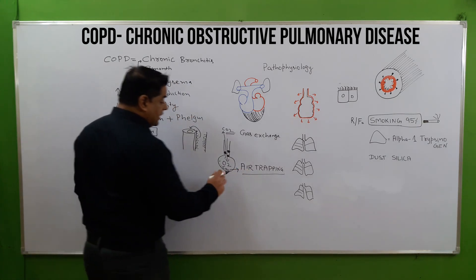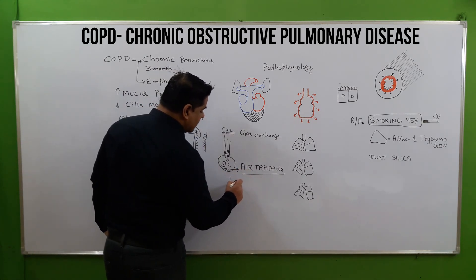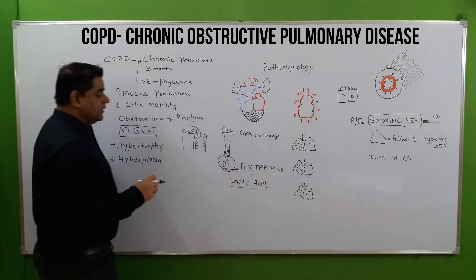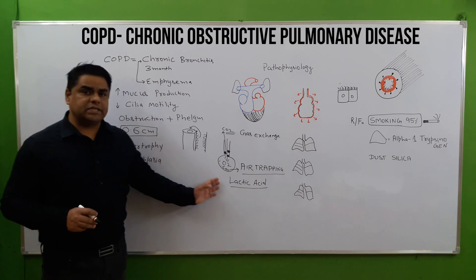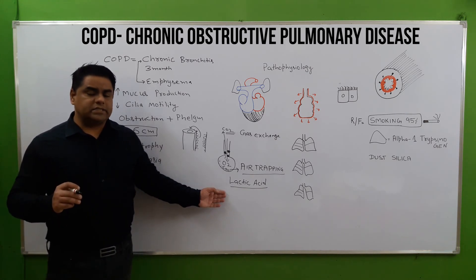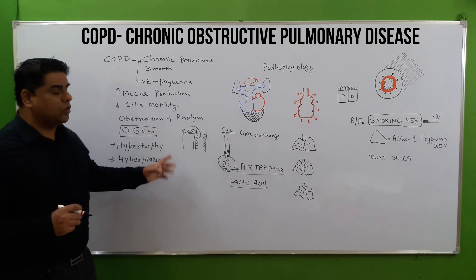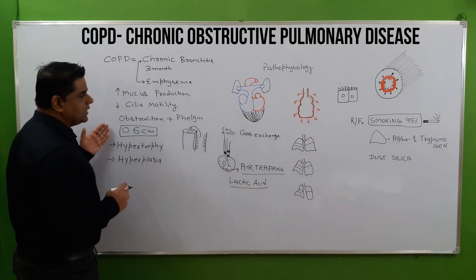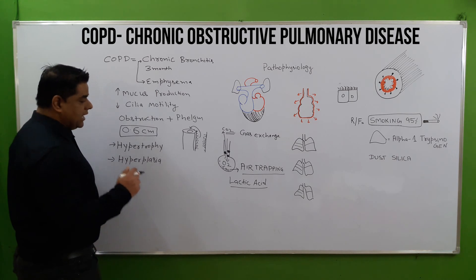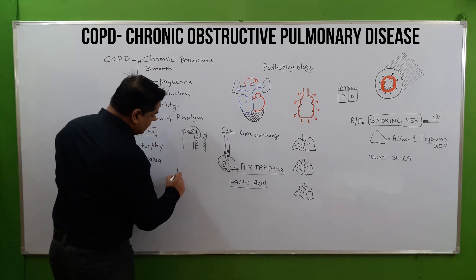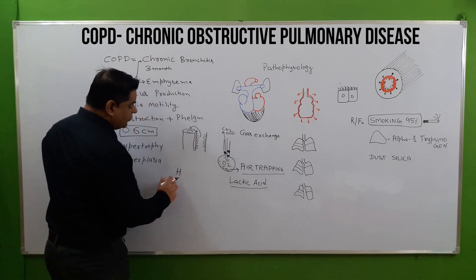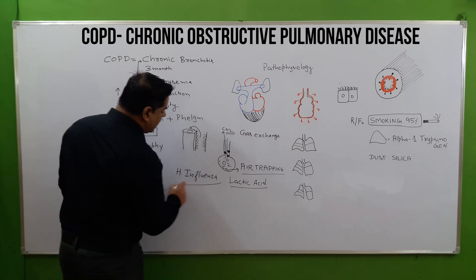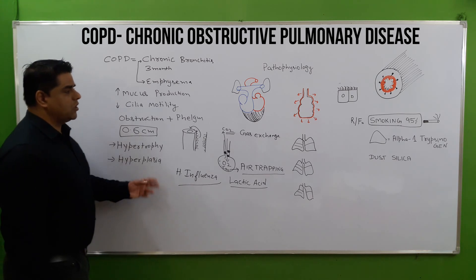CO2 accumulated here will make lactic acid. There are also chances of infection due to presence of mucus and dust particles. This infection is generally caused by Haemophilus influenzae, or influenza. Lobar pneumonia can also occur.